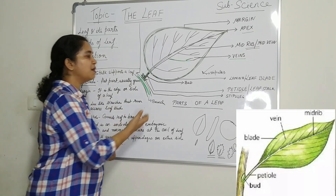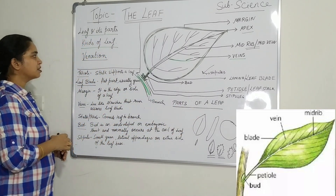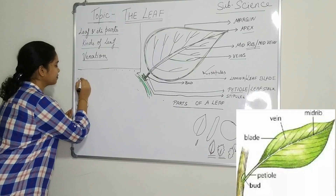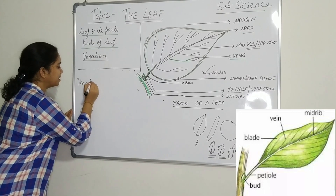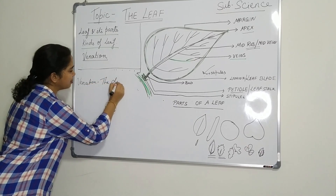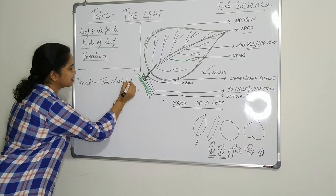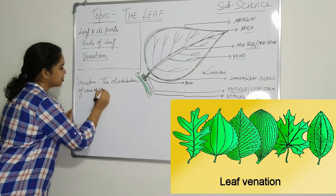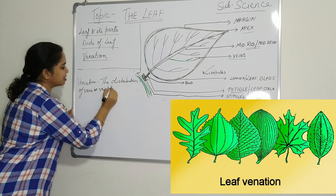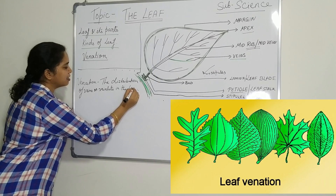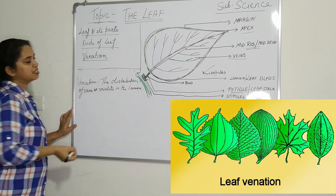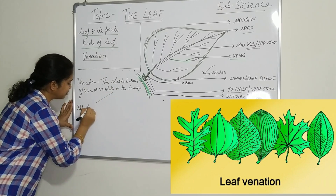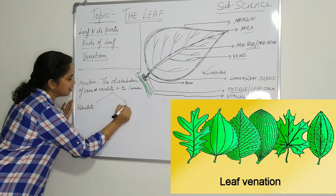This is all about the parts of the leaf. Now we will come to what do you mean by venation. The distribution of veins or veinlets in the lamina is called venation. There are two types of venation: reticulate venation and parallel venation.